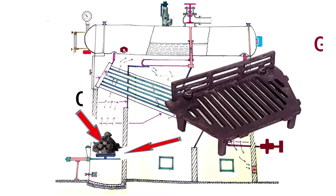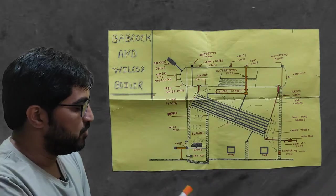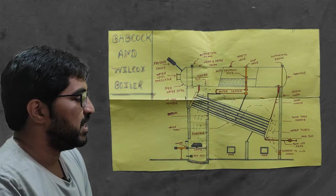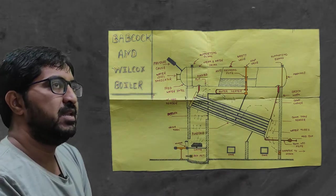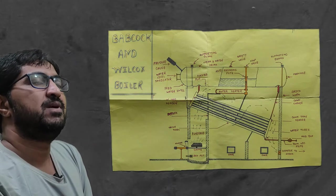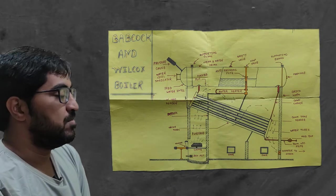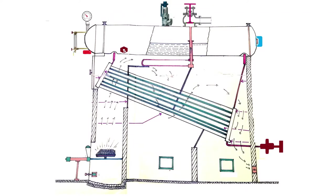After combustion is complete, whatever ash is produced is collected in the ash pit. The function of the ash pit is to collect the ash, which can then be used in cement plants as well as in other plants as a raw material. This region is the furnace.